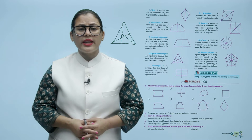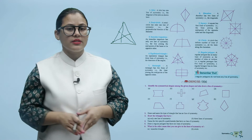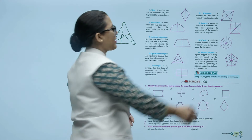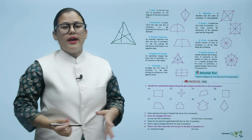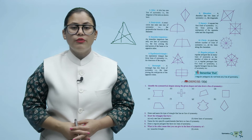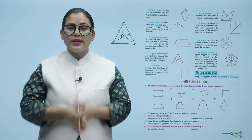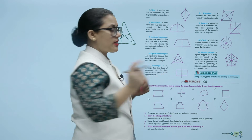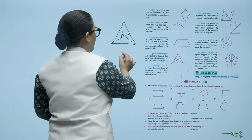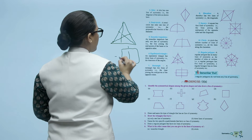A rhombus has two lines of symmetry, that are its diagonals. A square has four lines of symmetry: the lines joining the midpoints of the opposite sides and the two diagonals. Since all four sides of a square are equal, it has four lines of symmetry.